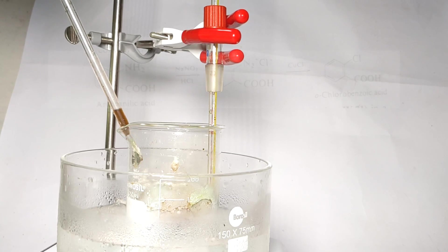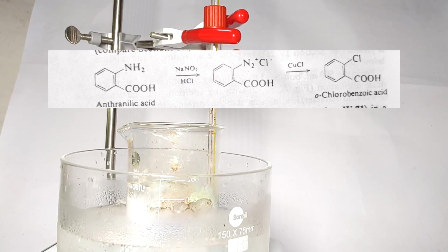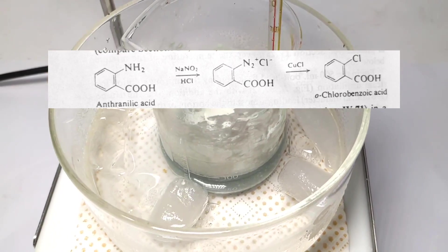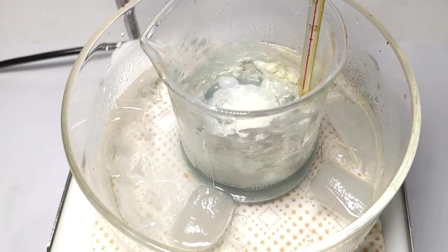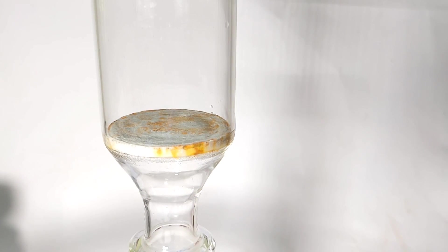If it foams up too much, you can use a glass rod to mechanically stir and break those bubbles. Once cuprous chloride solution is added completely, the mixture was kept stirring for another 20 minutes in the ice bath. Then the crystals formed is filtered.